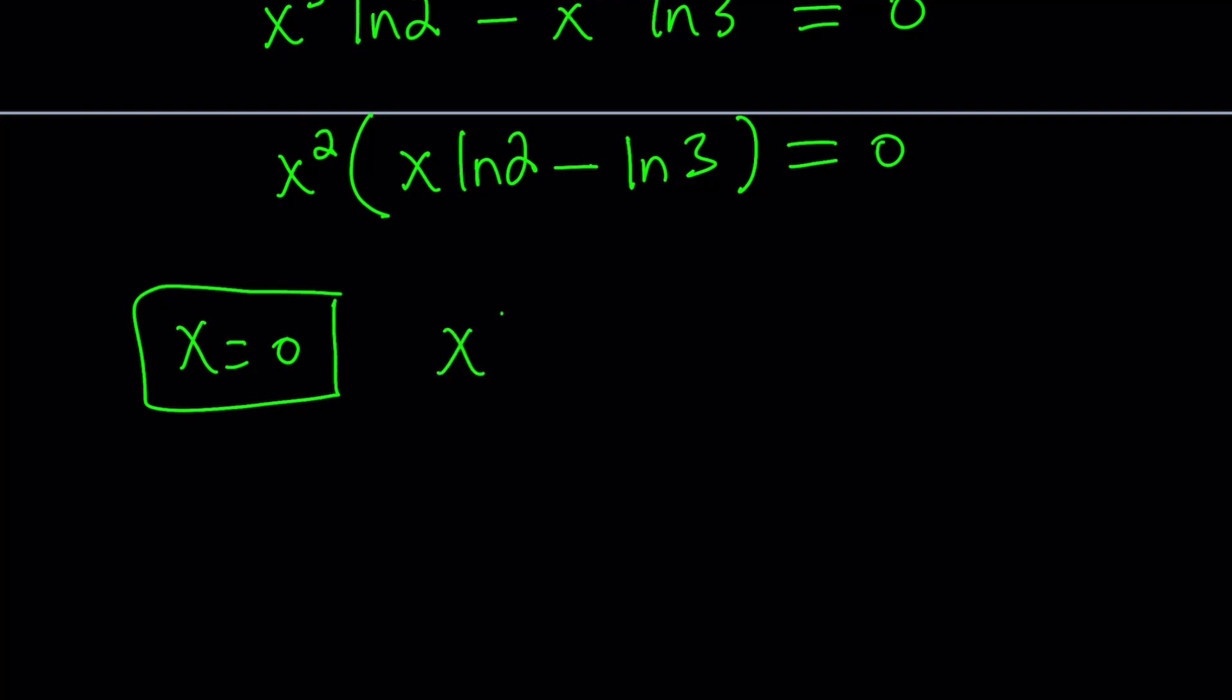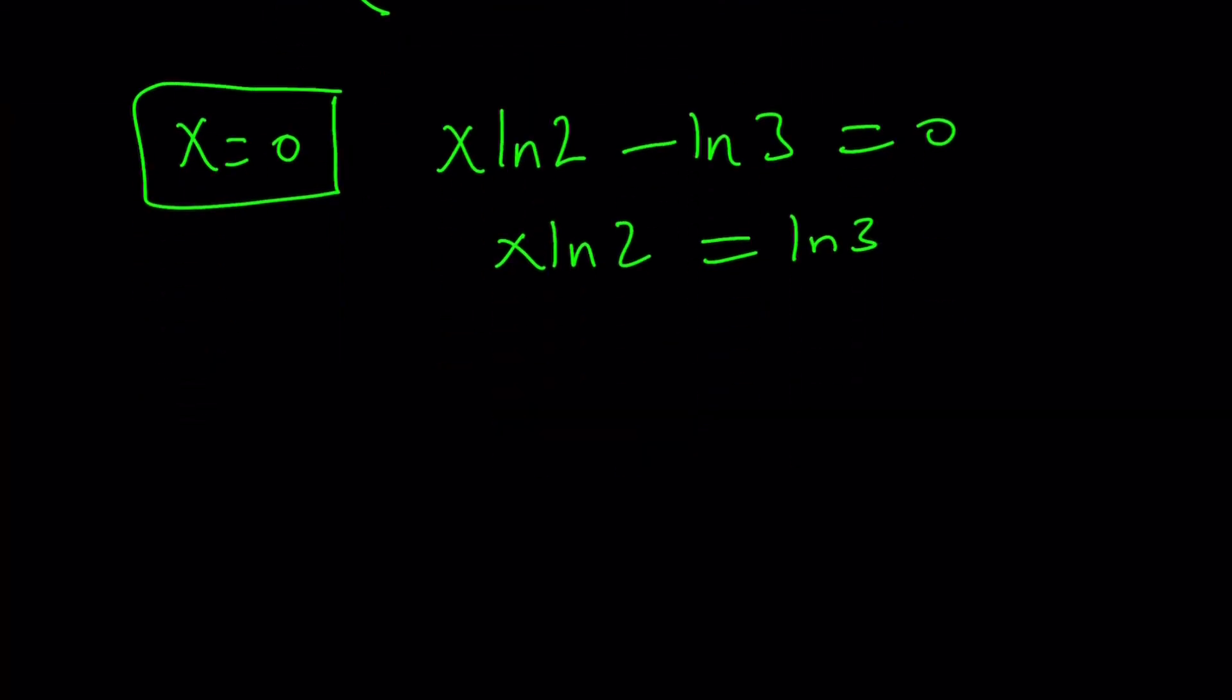The second solution comes from this equation. If you add ln 3 to both sides and divide by ln 2, you get x equals ln 3 over ln 2 as our second solution.